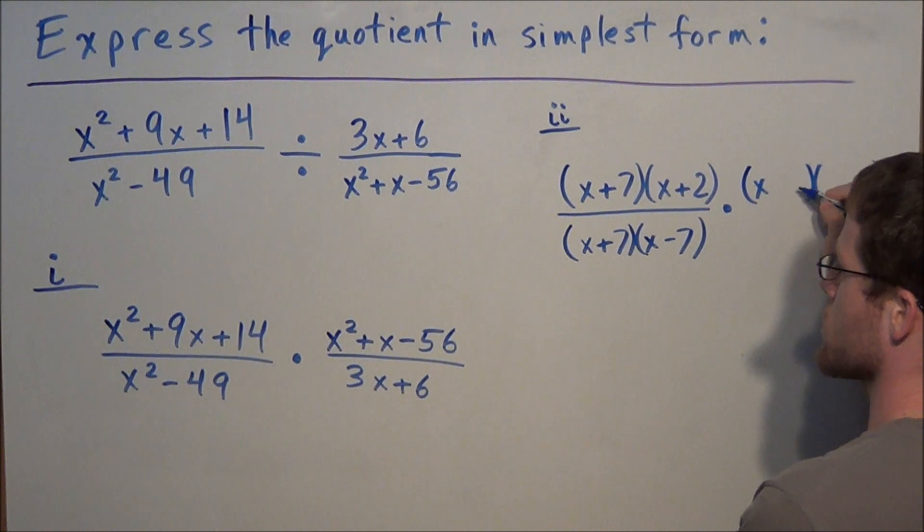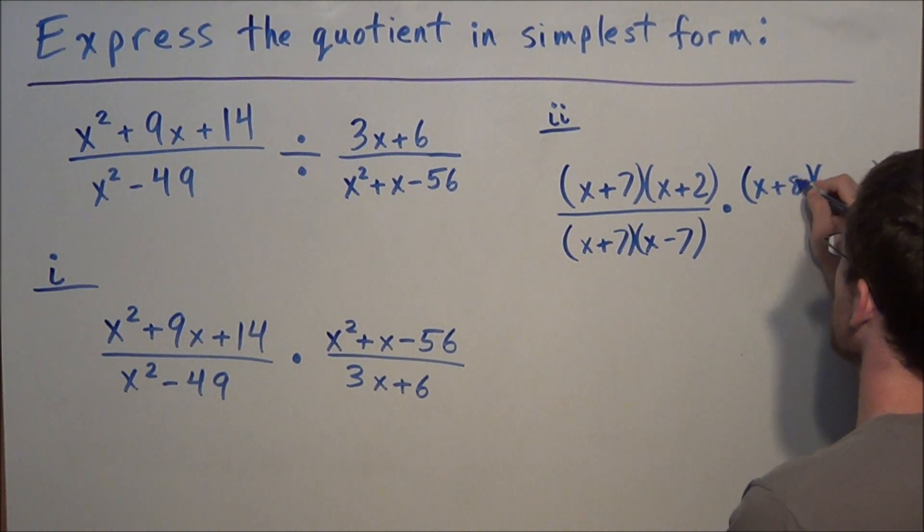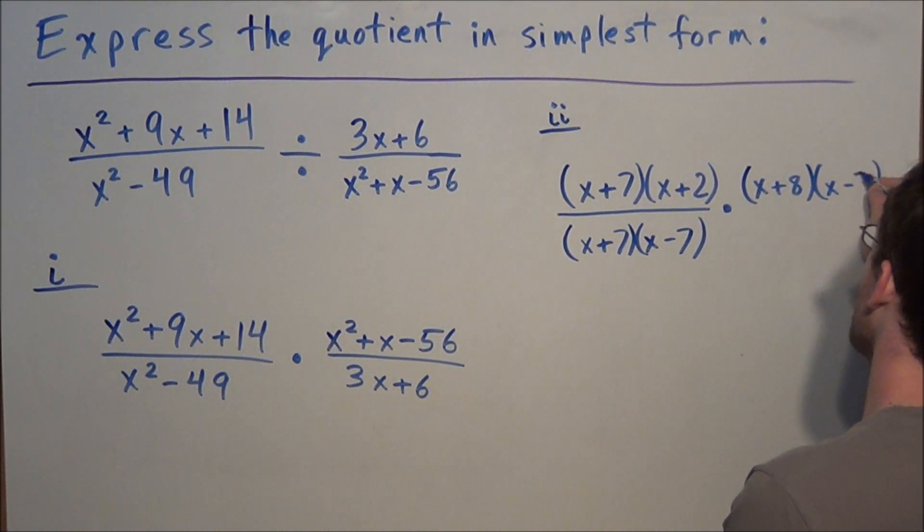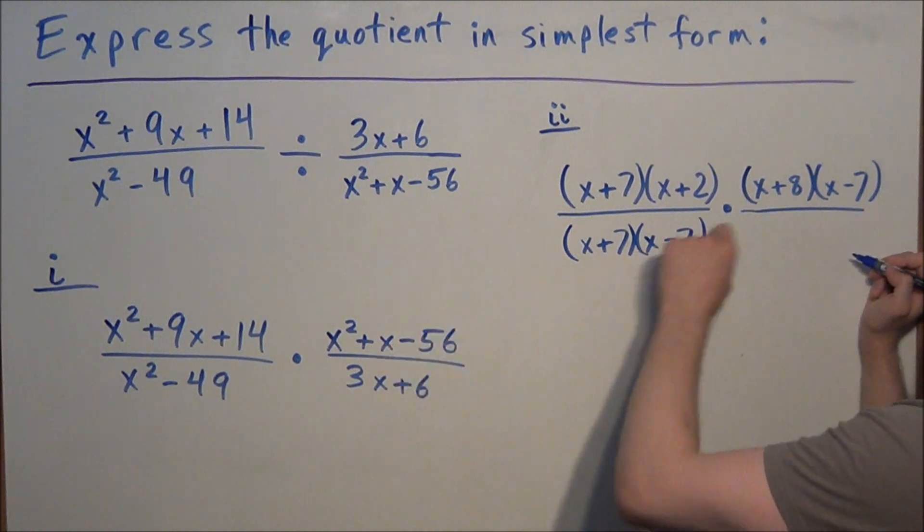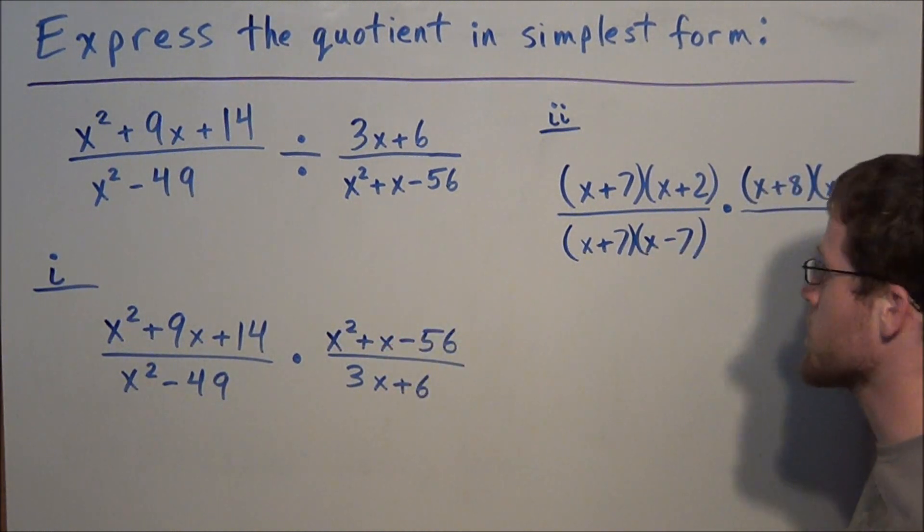So after a little bit more thought, we'll arrive at x plus 8 times x minus 7. This could quickly be checked because 8 plus negative 7 is 1 and 8 times negative 7 is negative 56.